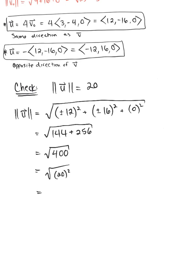Which we recognize as 20 times 20, or 20 squared, which leaves us with 20. So these two boxed vectors up here are two vectors parallel to the given V with a magnitude of 20.